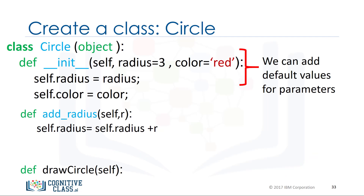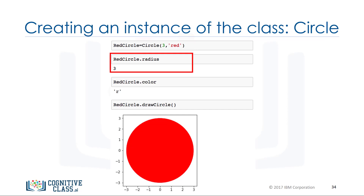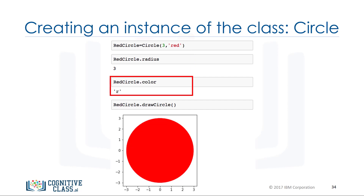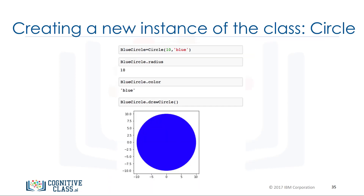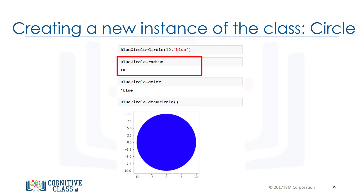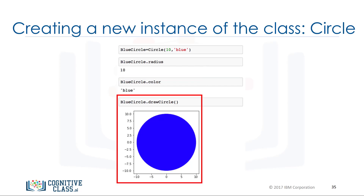We can add default values to the parameters of a class's constructor. In the labs, we also create the method called drawCircle — see the lab for the implementation. In the labs, we can create a new object of type circle with color red and radius 3, access the radius attribute, access the color attribute, and use the method drawCircle to draw the circle. Similarly, we can create another circle object, access its radius and color data attributes, and use the method drawCircle to draw it.